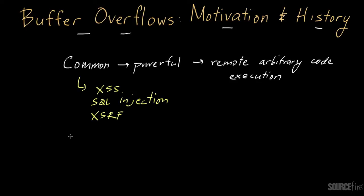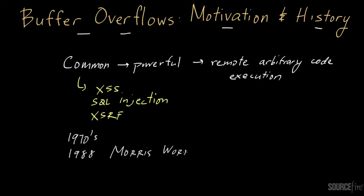Conceptually, people have known about buffer overflows since the late 1970s. One of the most famous examples — the most well-known instance of a buffer overflow exploit in the wild — occurred in 1988, and that was via what was called the Morris worm. This worm basically took advantage of a vulnerability in what was called the FINGER D program.